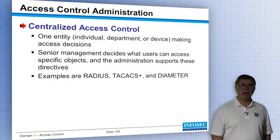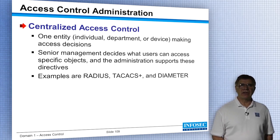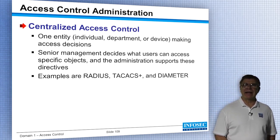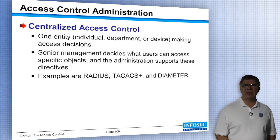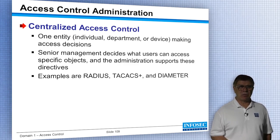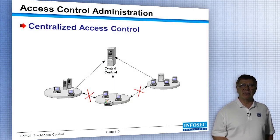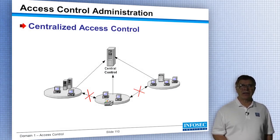With centralized access control, one entity — one location — makes the decision regarding access. Senior management has to decide, and it must be defined in the security policy. The data owner makes the ultimate decision, and senior management then decides what to have in place to support that — whether to use RADIUS, TACACS, TACACS Plus, or the new version of RADIUS, Diameter, as their centralized access control. One location controls access for everybody.